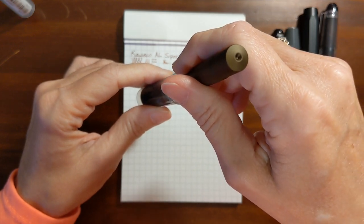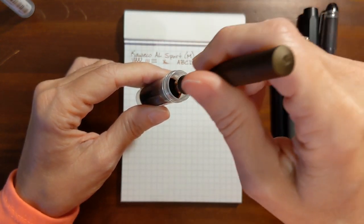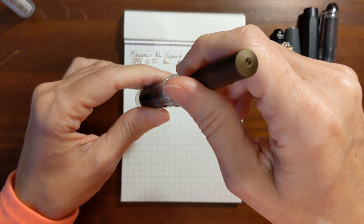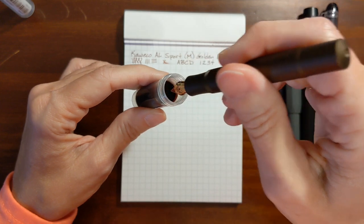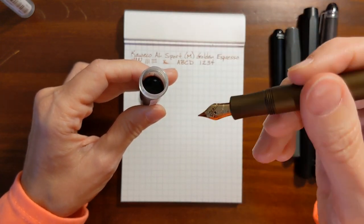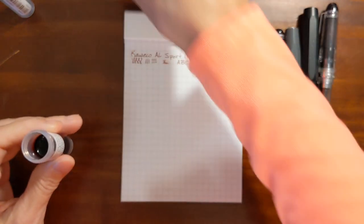When I dip my pens I just dip it up to roughly the breather hole. Really you don't even have to dip it that far, the capillary action works in reverse and the nib will actually just suck up quite a bit of ink.